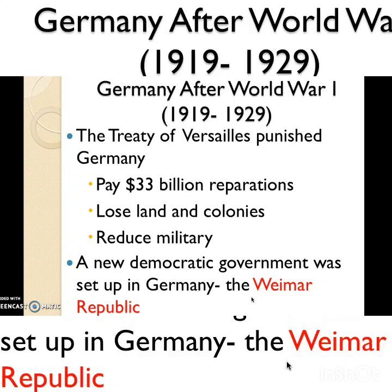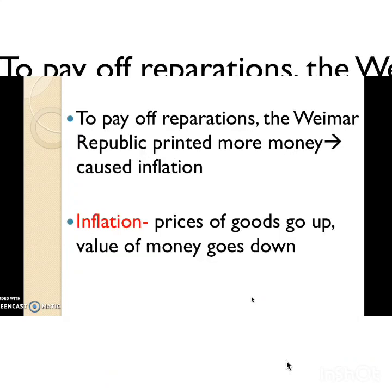To pay off the reparations, the Weimar Republic had a horrible idea: since 33 billion is a lot of money, why not just print more money? This never works for the economy. Printing more money causes something called inflation. The definition of inflation is when the prices of goods go up but the value of the money goes down — prices skyrocket but your money's worth decreases.